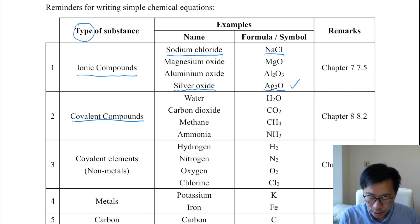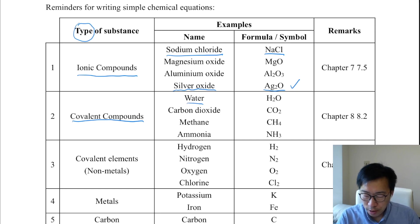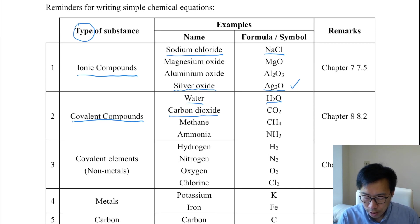For covalent compounds, for example, water, you write H2O. For carbon dioxide, you write CO2.